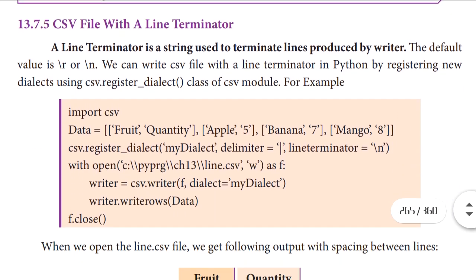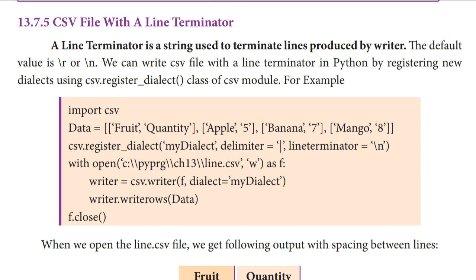Next we are going to see CSV file with a line terminator. A line terminator is a string used to terminate lines produced by the writer. We use this to terminate the lines. The default value is \r or \n — either one can be used. We can write a CSV file with a line terminator in Python by registering new dialects using the csv.registerDialect class.